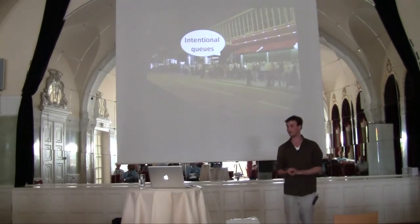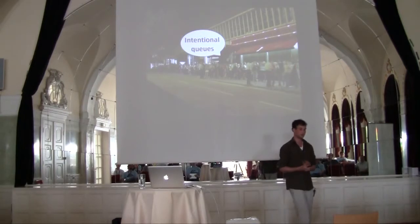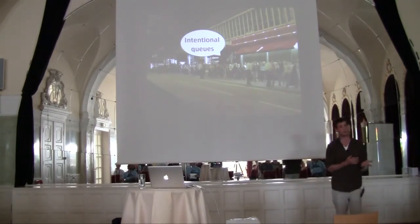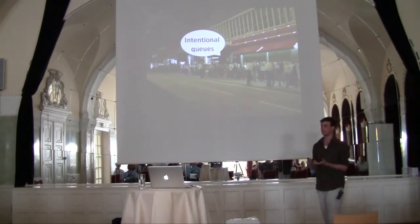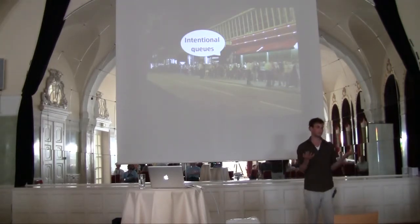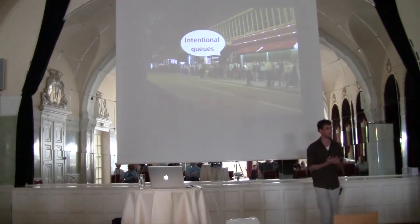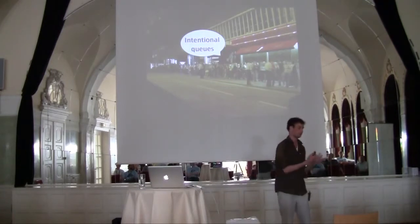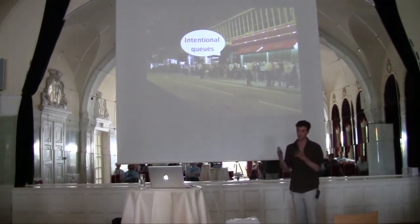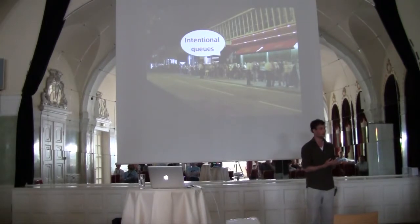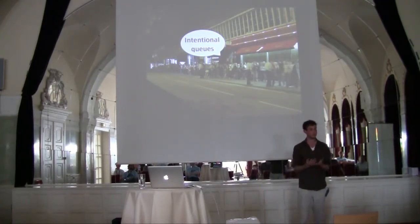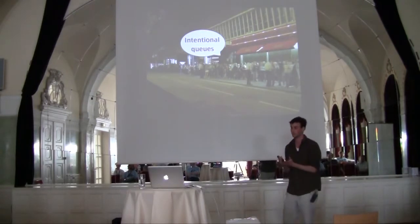Another example: intentional queues at clubs. Often when you go to a popular club in a big city, there's a queue in front of it, and once you get in, the club's not full. They are creating these queues hoping to provide social proof for that club. After all, there is a queue, so the club must be popular. If they let all those people in, there wouldn't be a queue anymore, and therefore the club wouldn't be popular. It's a self-fulfilling concept — if you keep the queue intact, it will be perceived as popular and more people will come.